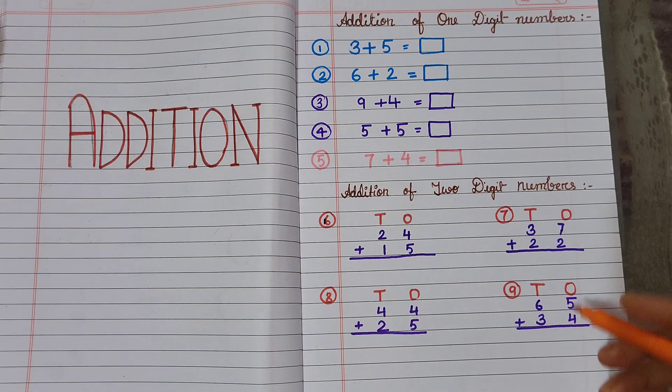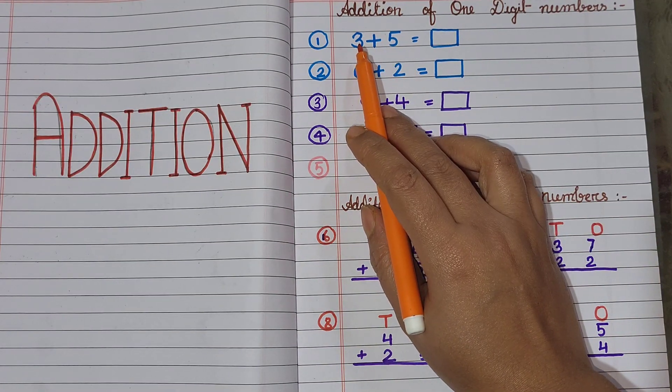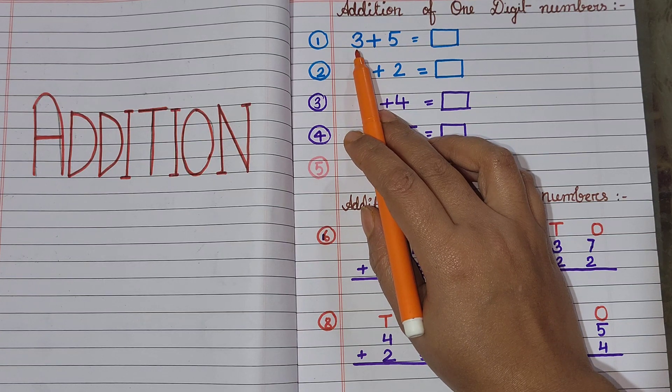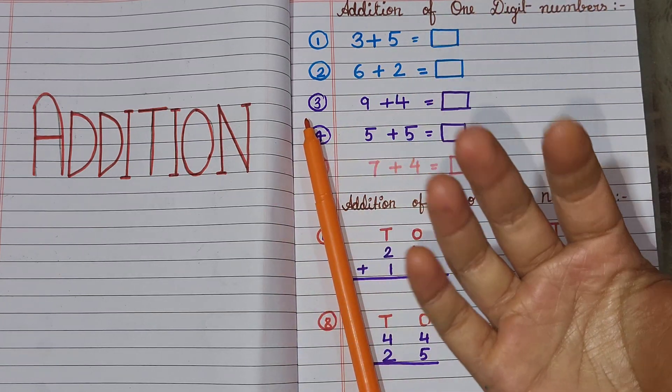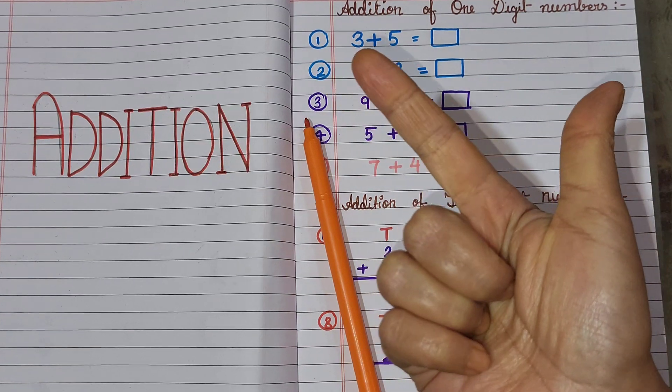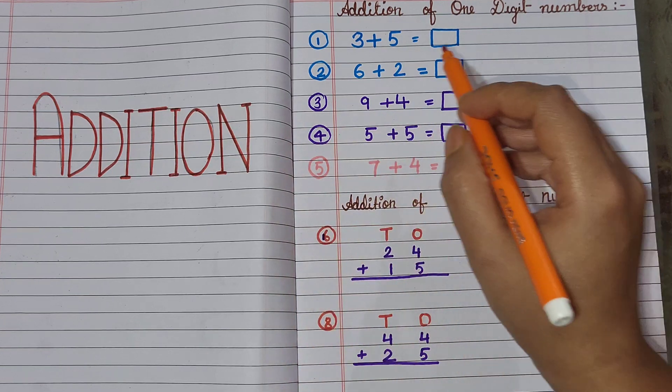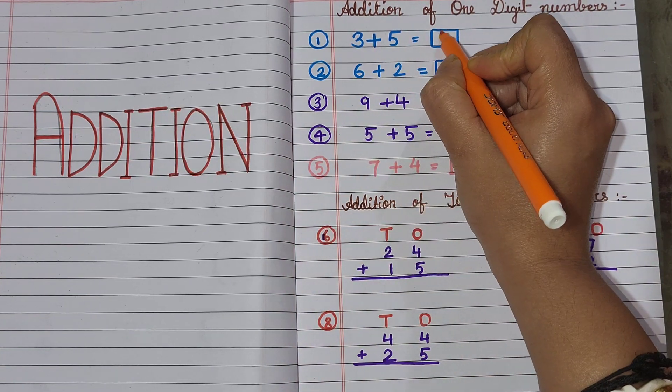First, here we have 3 plus 5. How do we learn to add? 3 in my mind and 5 fingers up. 3 after which number will come? 4, 5, 6, 7, 8. Then, 3 plus 5 equals 8.